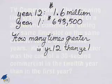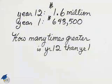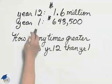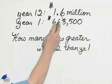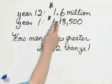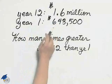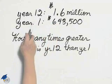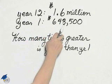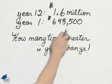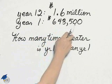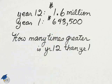From the graph, you can read that in year 12, it was $1.6 million. In the first year, $643,500.